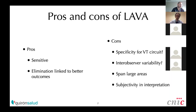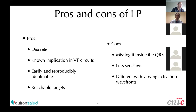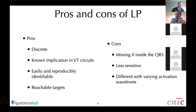If we consider late potentials, they have pros: they are discrete, have known implications in VT circuits, are easily and reproducibly identifiable, and are reachable targets. The cons are that they could be missed if they are inside the QRS, they are less sensitive, and they can be very different with varying activation wavefronts.